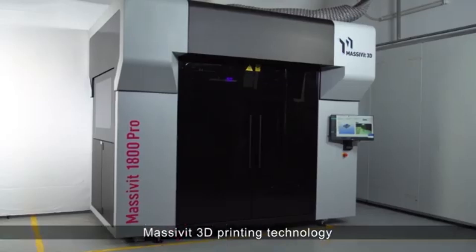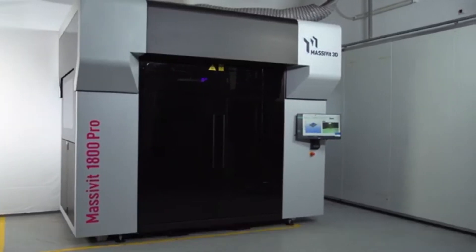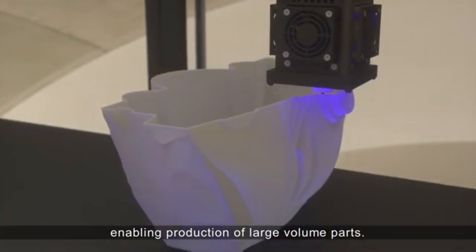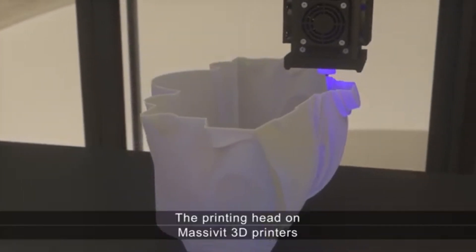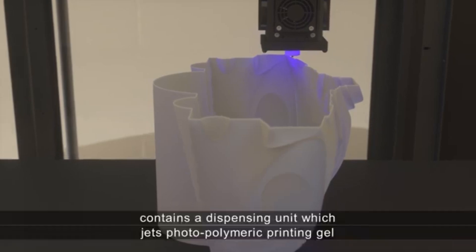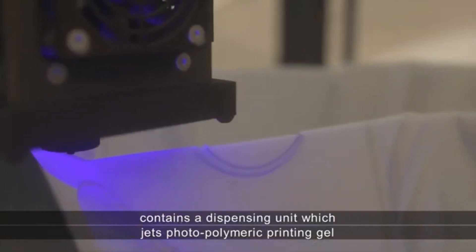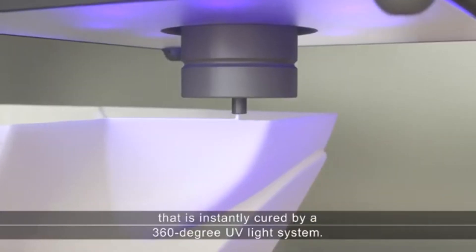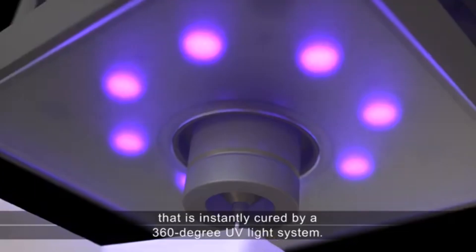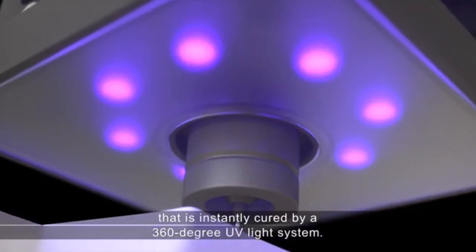Massivit 3D printing technology is the world's fastest technology enabling production of large volume parts. The printing head on Massivit 3D printers contains a dispensing unit which jets photopolymeric printing gel that is instantly cured by a 360 degree UV light system.